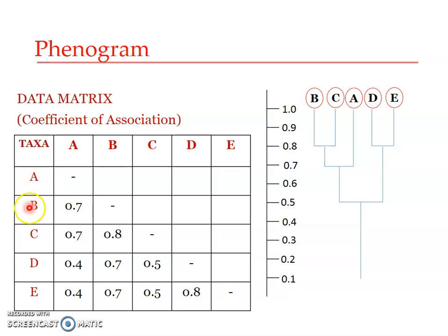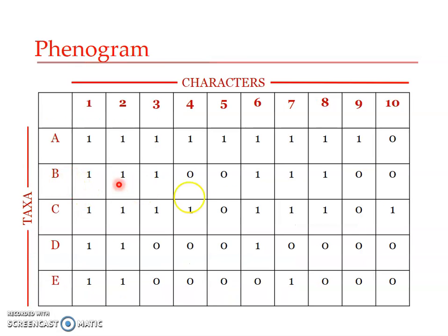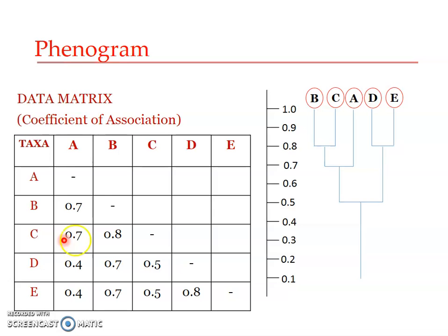So species A and B show 70% similarity, indicated as 0.7. We do this for every combination: A and C, A and D, A and E, B and C, B and D, B and E, and so on. This produces a similarity table. A compared with itself is 100% similar, or 1.0. The maximum is 1.0 meaning all ten characters match, and the minimum could be 0.1 meaning only one character out of ten is similar.